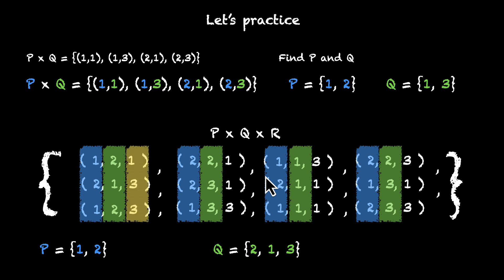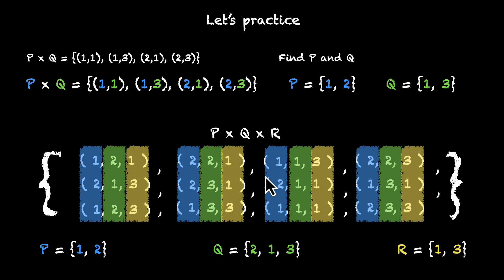And what about R? We have 1, 3, 3, 1, 1, 3, 3, 1, 1 and then 3, 1, 3. Okay, 1s and 3s. So R is {1, 3}. This is how you move in the reverse direction. When you're given a product, this is how you figure out the original sets.